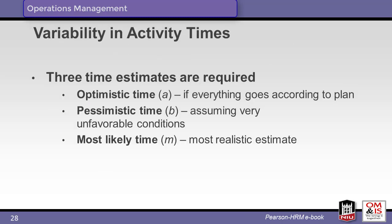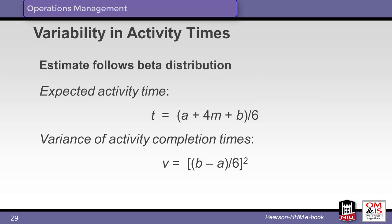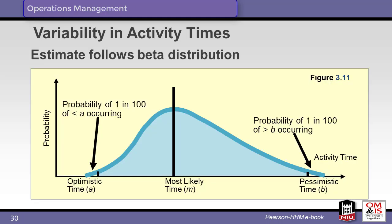To understand volatility, we start by creating three estimates: A, the optimistic time; B, the pessimistic time; and M, the most likely time, found somewhere between the A and B values. The expected activity time and variance are calculated using the optimistic, pessimistic, and most likely times. Variability in activity times follows a beta distribution as shown here. Note that the curve, while similar to the normal distribution, is shifted to the right.